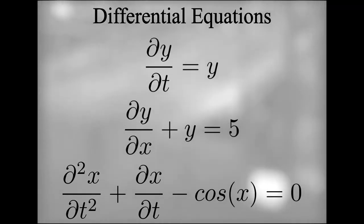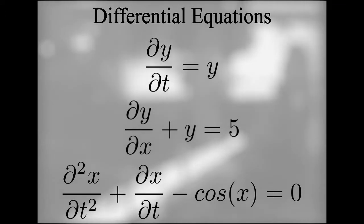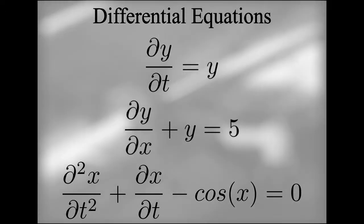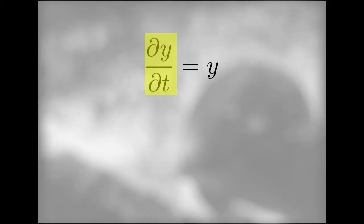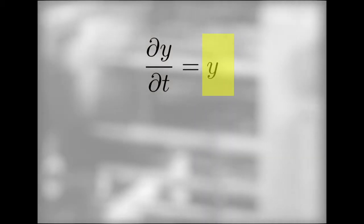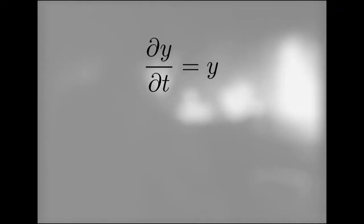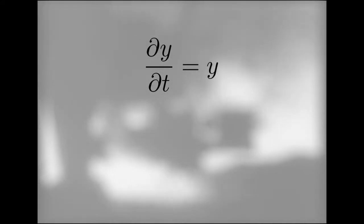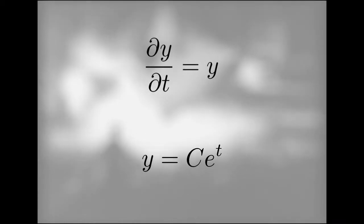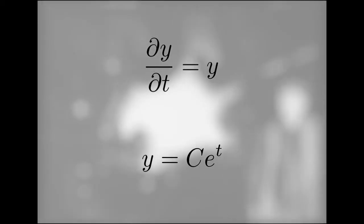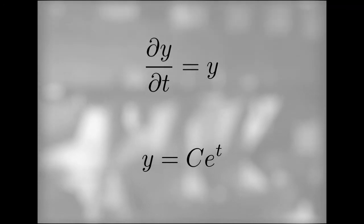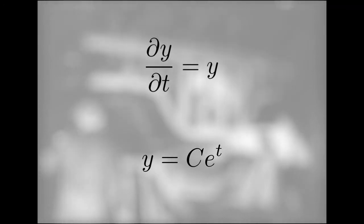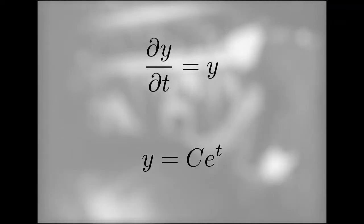Differential equations are equations which contain a function along with how the function changes. They are very useful for describing systems found in the real world. A basic example simply states that the rate of change of a function at a given point in time is equal to the value of that function at the same point in time. The function itself is unknown and must be calculated using various techniques, the main one being calculus. Solving a differential equation usually leads to a family of solutions, represented by an arbitrary constant C. With additional information such as initial conditions, we would be able to find an exact function. This is an example of an ordinary differential equation, meaning it only changes with respect to one variable — time in this case.